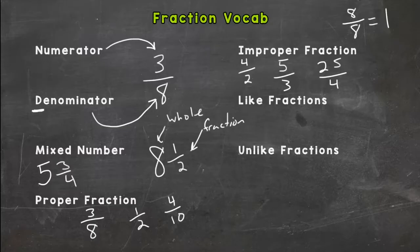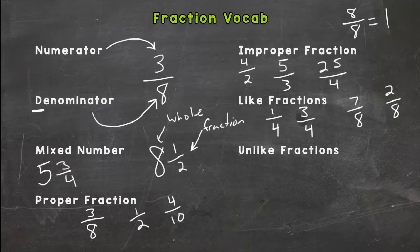Like fractions means that the denominators are the same. So if we had one-fourth and three-fourths, those are like fractions because the denominators are the same. Or maybe seven-eighths and two-eighths, those are like fractions because the denominators are the same.